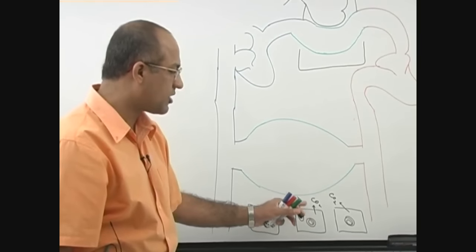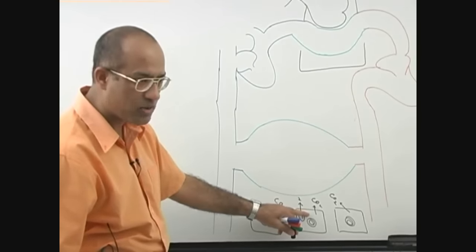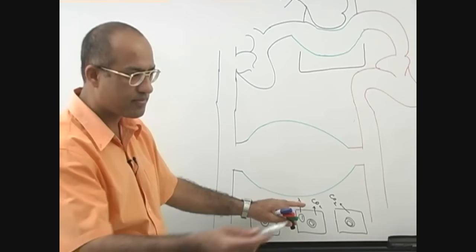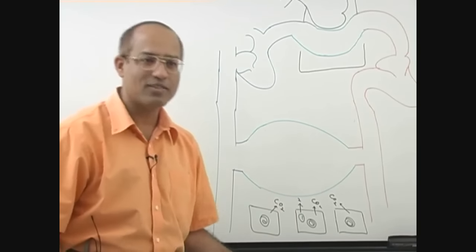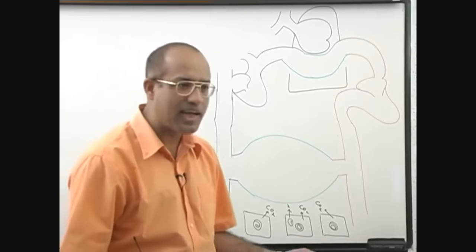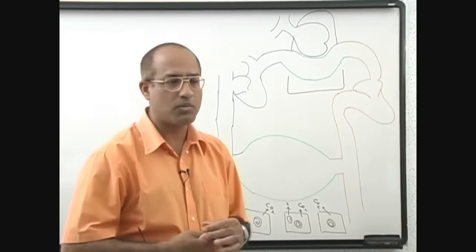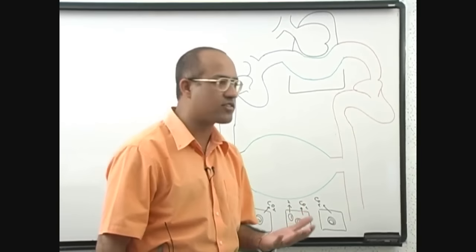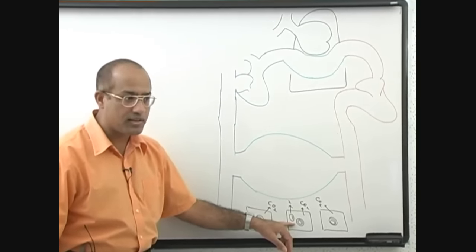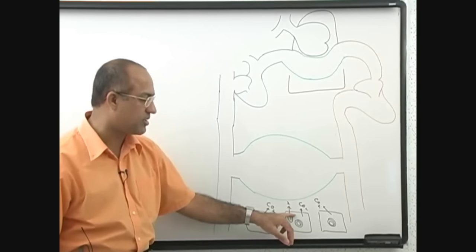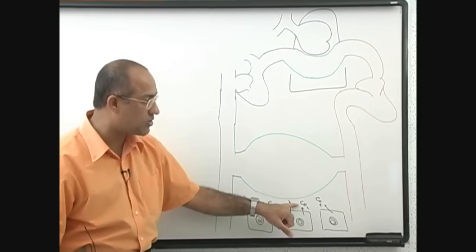How is carbon dioxide transported from inside the cell to the interstitial fluid? By simple diffusion. Carbon dioxide is lipid soluble, so no special transport mechanism is required. Carbon dioxide is about 25 to 27 times more soluble than oxygen. Because it is highly soluble in lipids, it dissolves through cell membranes and through simple diffusion comes into the interstitial fluid, where it is again present in dissolved form.